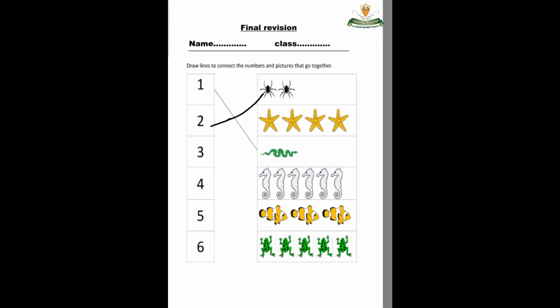Okay, how many starfish? One, two, three, four. Where is number four? Excellent! Let's count seahorse — one, two, three, four, five, six. Where is number six? Yes, very good!